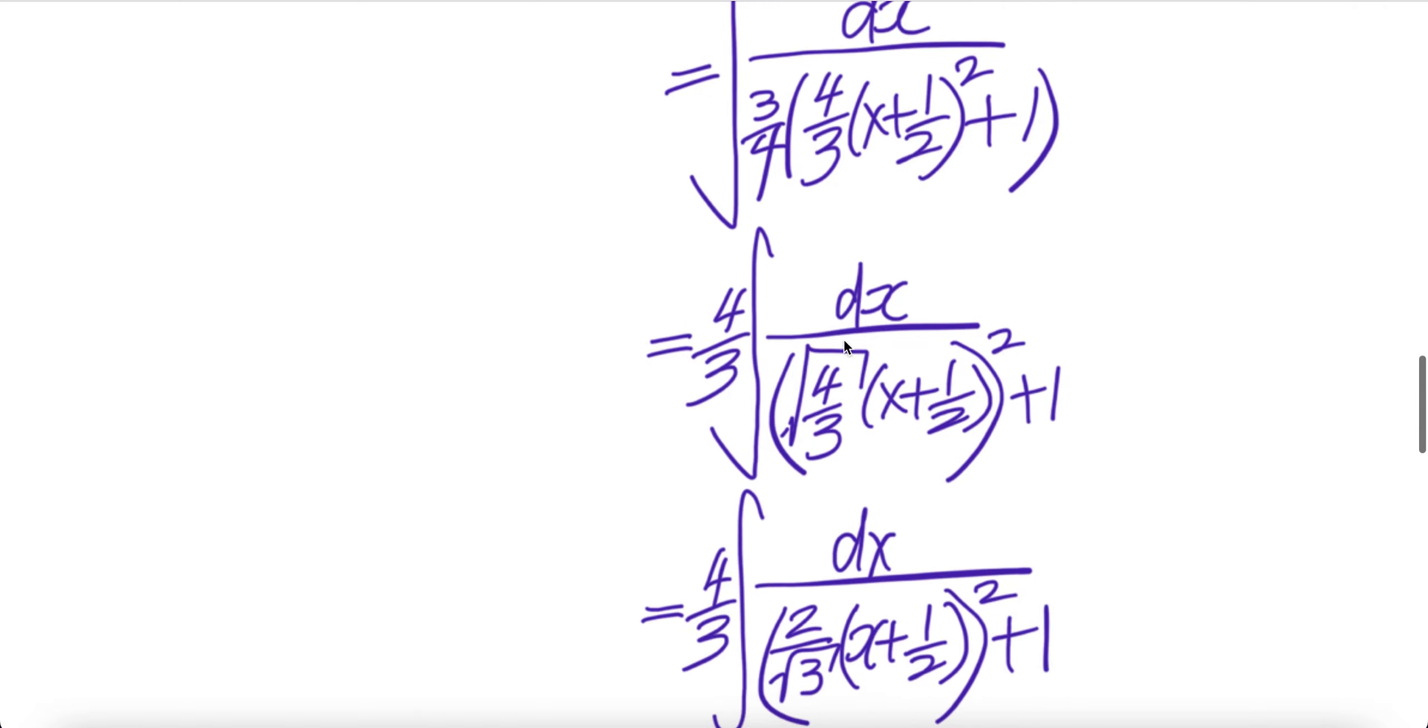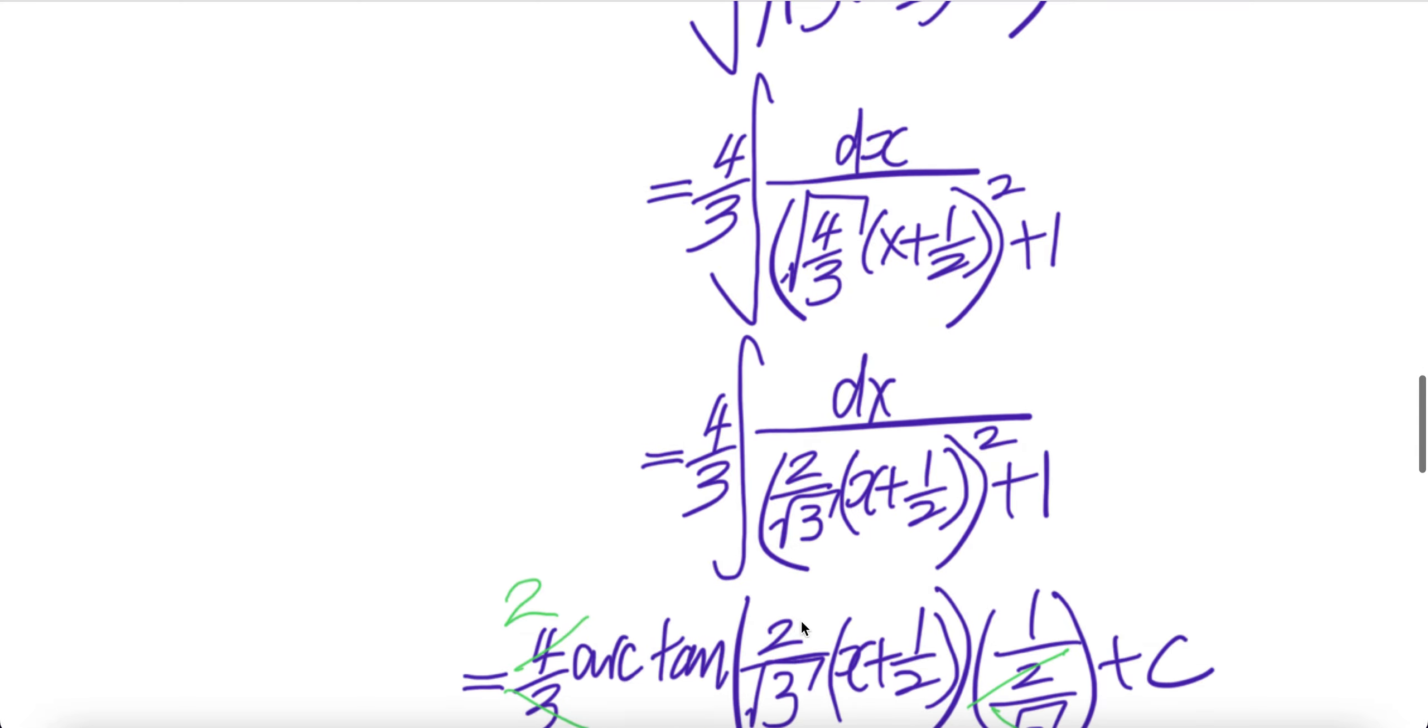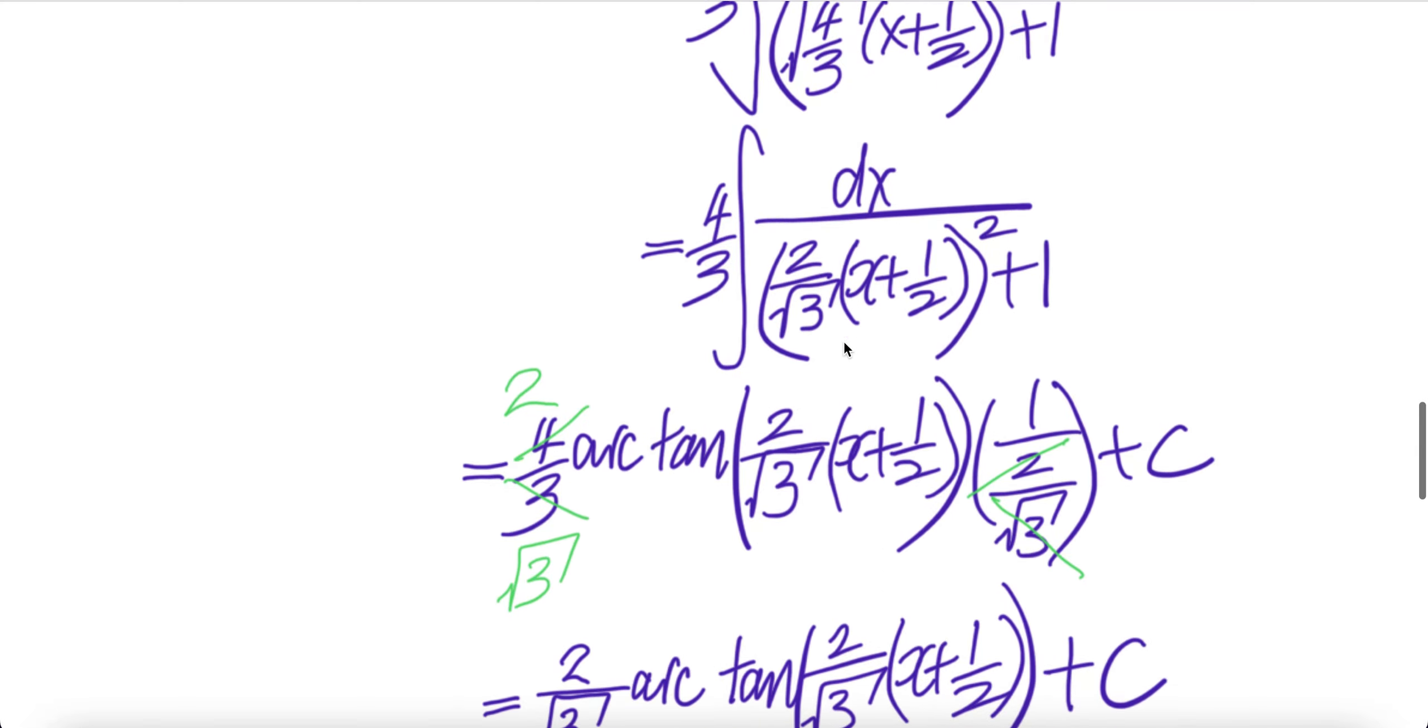And square root of four is two over square root three. You get two over square root three. Everything is the same. Now we can output the integral.